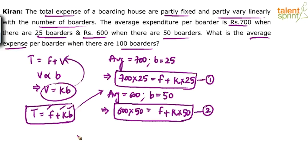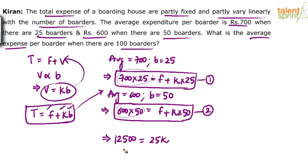Solving the two equations: f cancels out. 600 × 50 is 30,000; 700 × 25 is 17,500. So 30,000 minus 17,500 equals 12,500. That 12,500 equals 50k minus 25k, which is 25k. So k = 12,500 ÷ 25, which comes out to be 500. The value of k is 500.